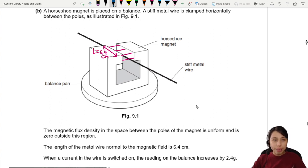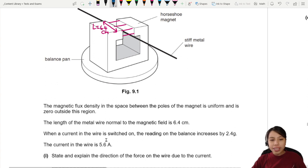Here's where the magic happens. When the current in the wire is switched on, the reading increased by 2.4 grams. Current in the wire is 5.6 amps.